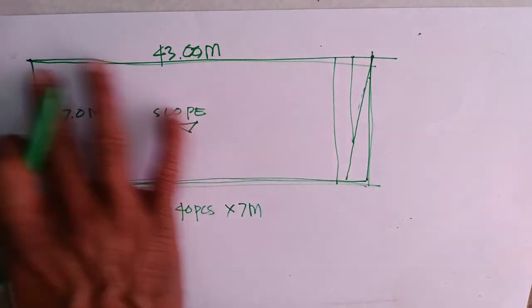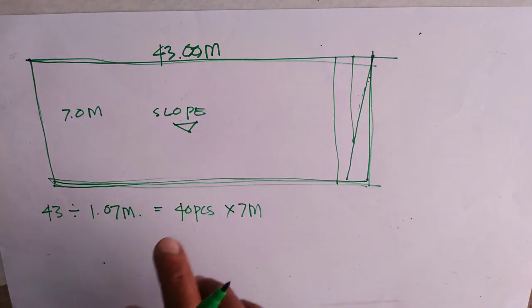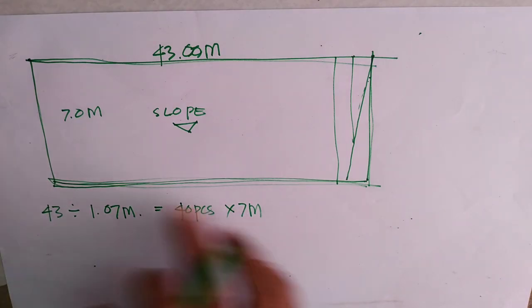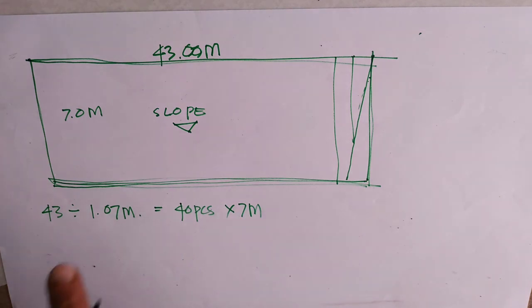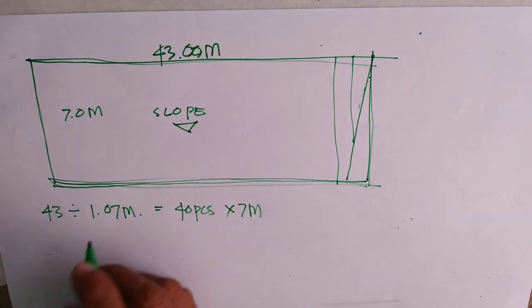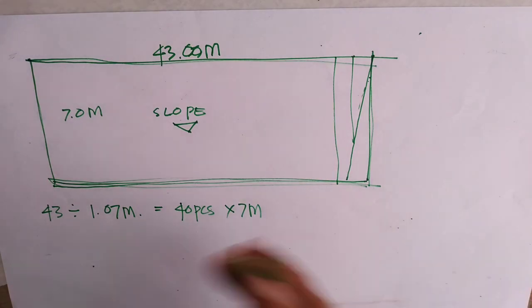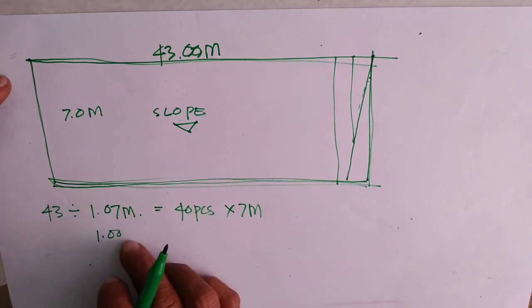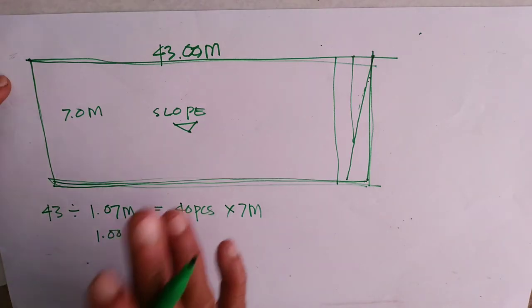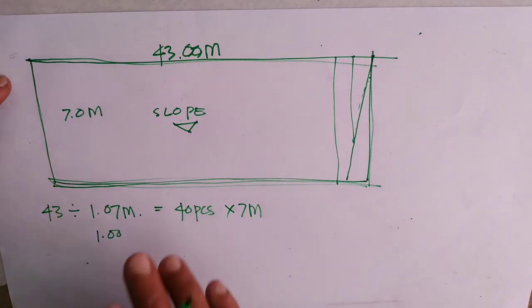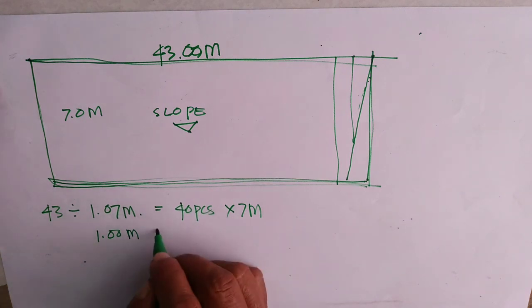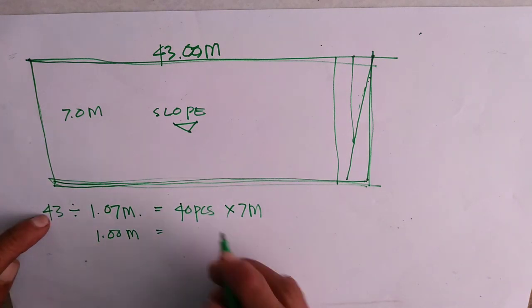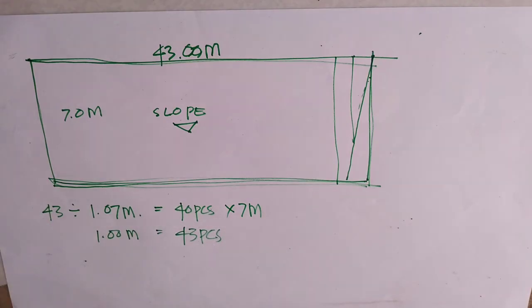So, itong sukat na ito, 43 meters, gagamit po tayo ng 40 piraso na 7 meters. Pero, ito yung gagamitin nyo. Kasi pag ginamit nyo yung mayroong kasing grid type na may 1 meter yung coverage nya. 1 meter 1.04 Iba po ang kalalabasan nya. Pagka ganito yung ginamit nyo, yung makitid. Sa 1 meter, lumalabas yan 43 pieces yan. So, magkaiba po yan.